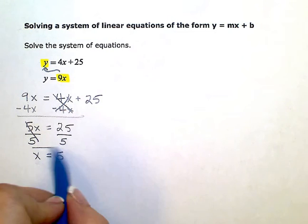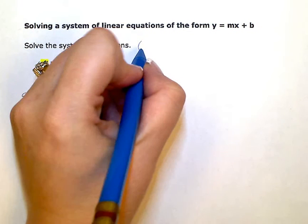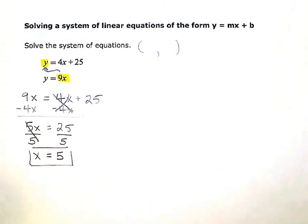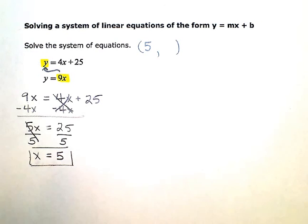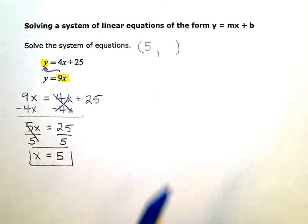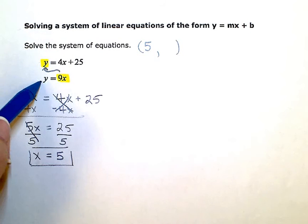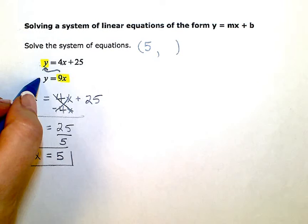So I have a value for x. So I'm halfway done with my solution. I have the x number. Now I need the y value, the other half of my solution or the other part to my coordinate pair there. So I'm just going to pick either one of these. It doesn't really matter which one. I'm going to use this one because it just looks easier.